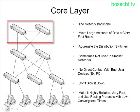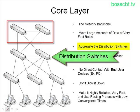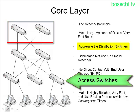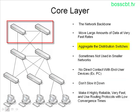Let's start with the core layer, located at the top of this diagram. The core layer is your network backbone, responsible for moving large amounts of data at very fast transfer rates. It's used to aggregate your distribution switches. Each layer aggregates the next — an access switch aggregates your PCs, distribution switches aggregate all access switches, and core switches aggregate your distribution switches. In smaller networks, you sometimes don't need a separate core layer; it can be collapsed into the distribution layer, sometimes referred to as a collapsed core design.